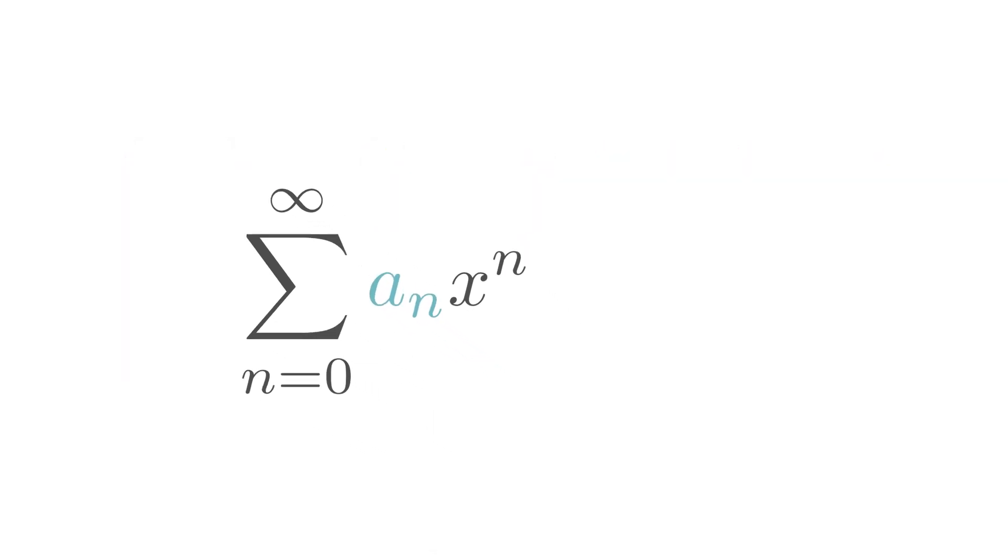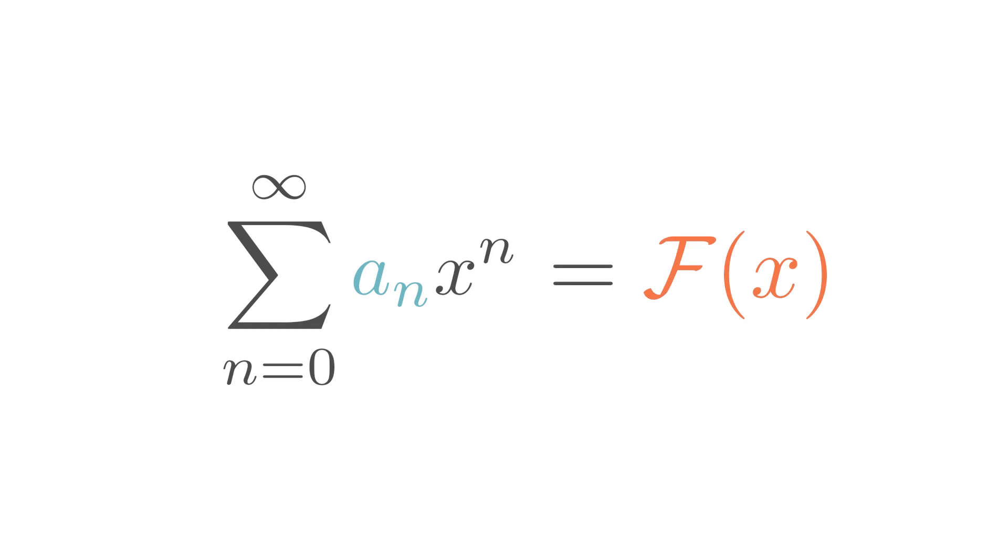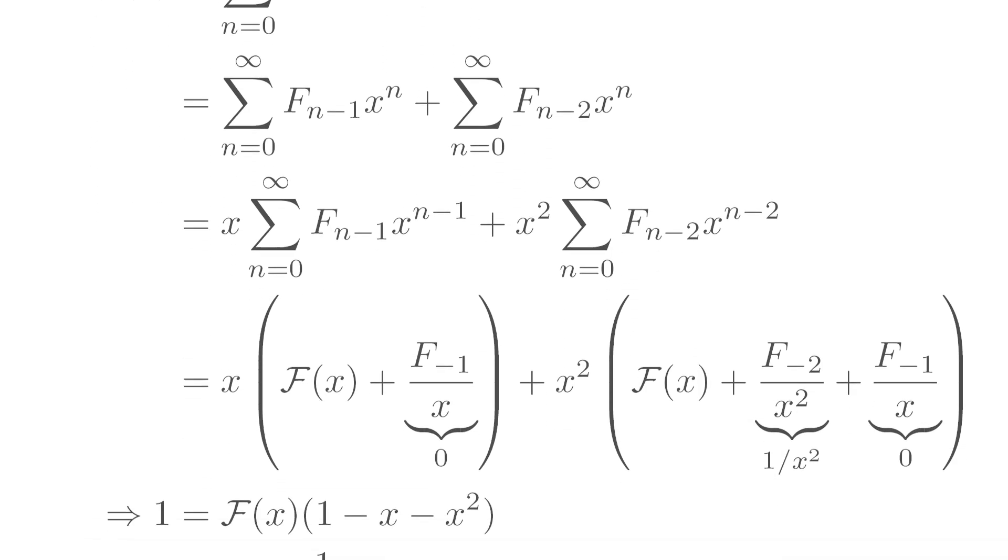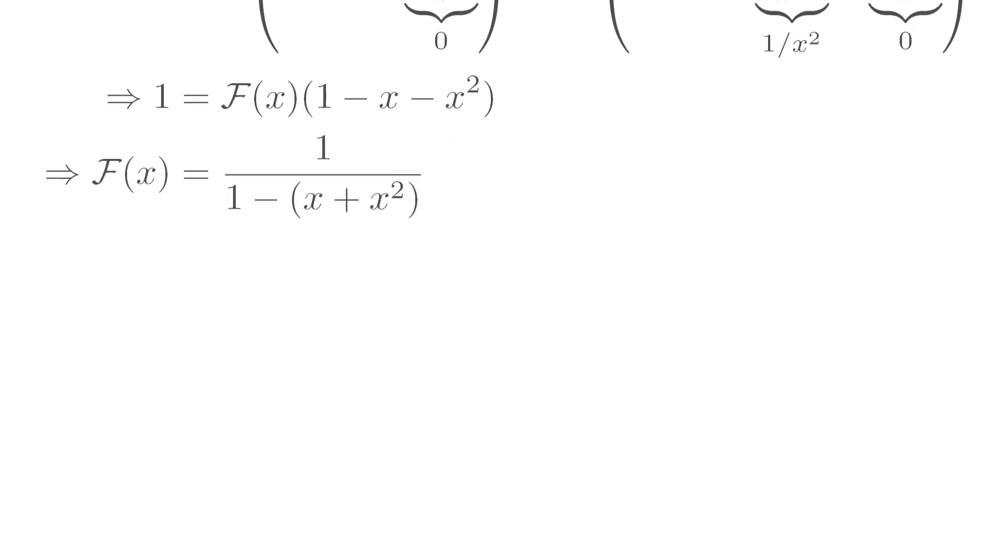Sometimes such power series can have a closed form and in this case of Fibonacci sequence it happens to be doable. By some simple arithmetic, we can get that the generating function of a Fibonacci sequence looks exactly like this.